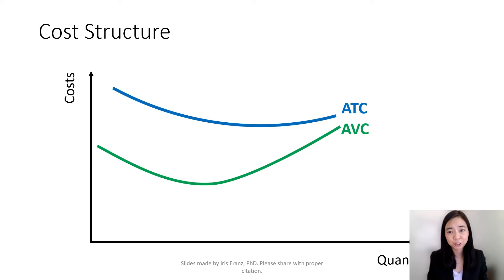Remember, we talked about the cost structure of the firm. We have average total cost, average variable cost, as well as the marginal cost.